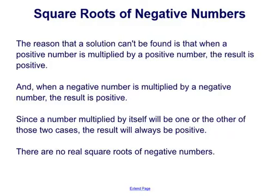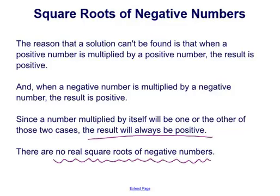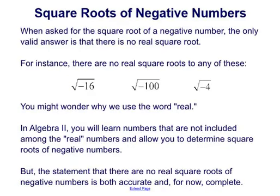You and your partner shouldn't have been able to find an answer — a solution cannot be found. The reason is that when a positive number is multiplied by a positive number, the result is positive, and when a negative number is multiplied by a negative number, the result is also positive. Since a number multiplied by itself will always be one of these two cases, the result will always be positive. So there are no real square roots of negative numbers. When asked for the square root of a negative number, the only valid answer is that there is no real square root.